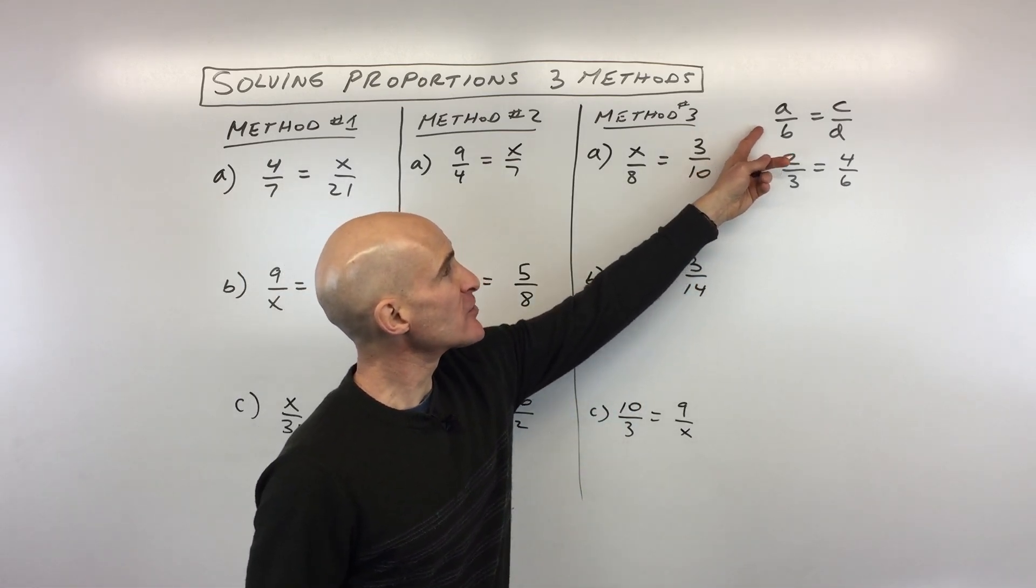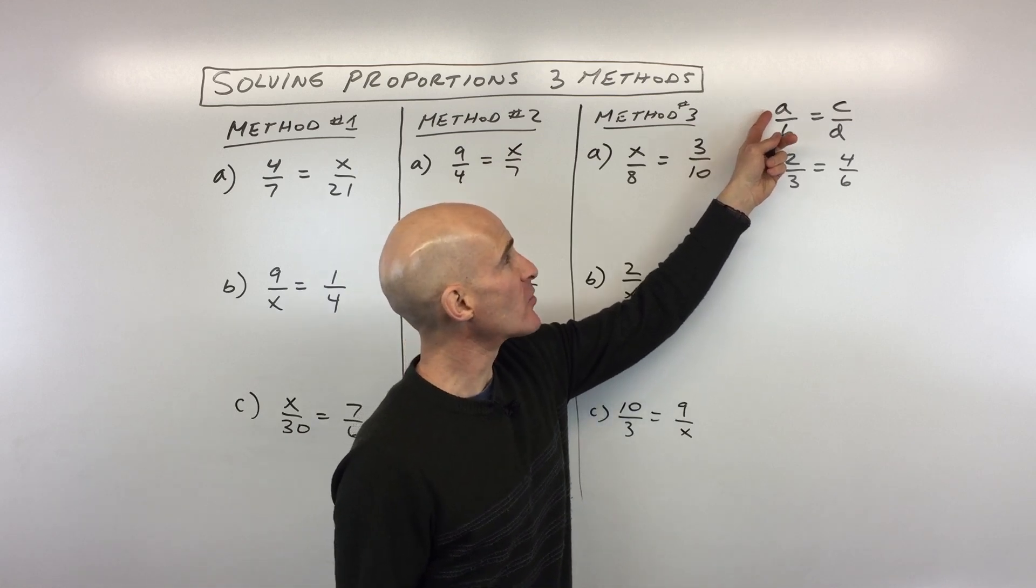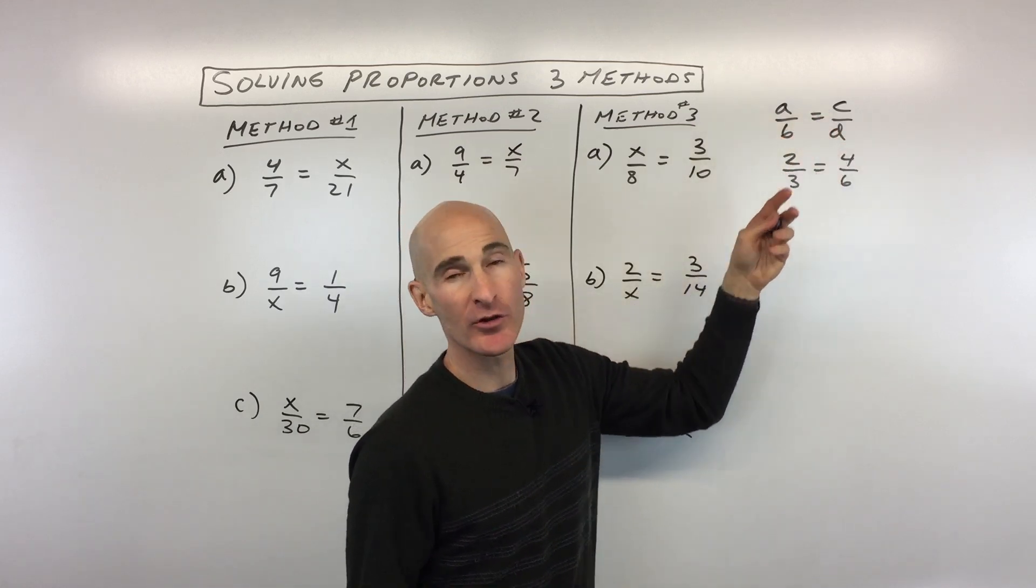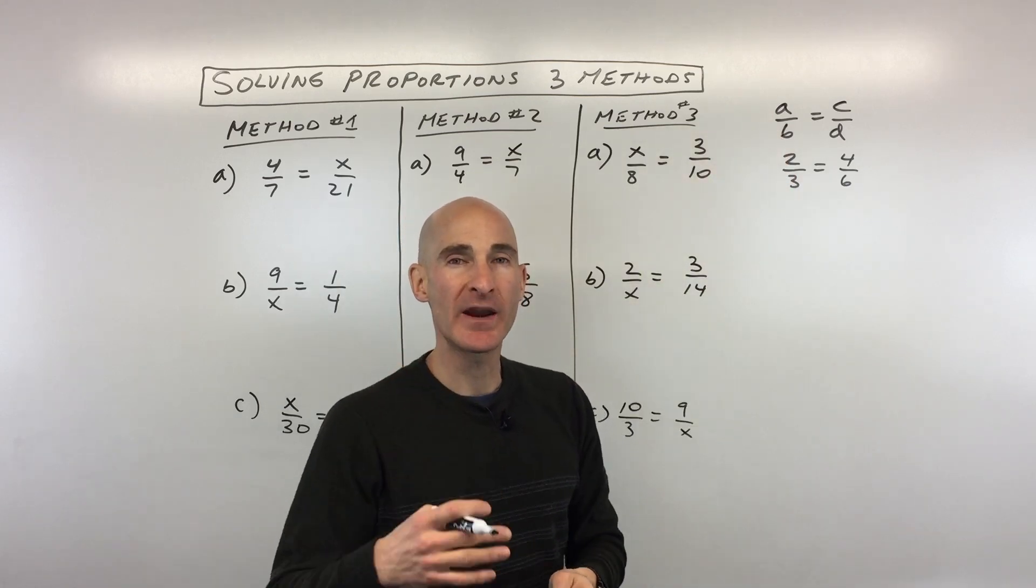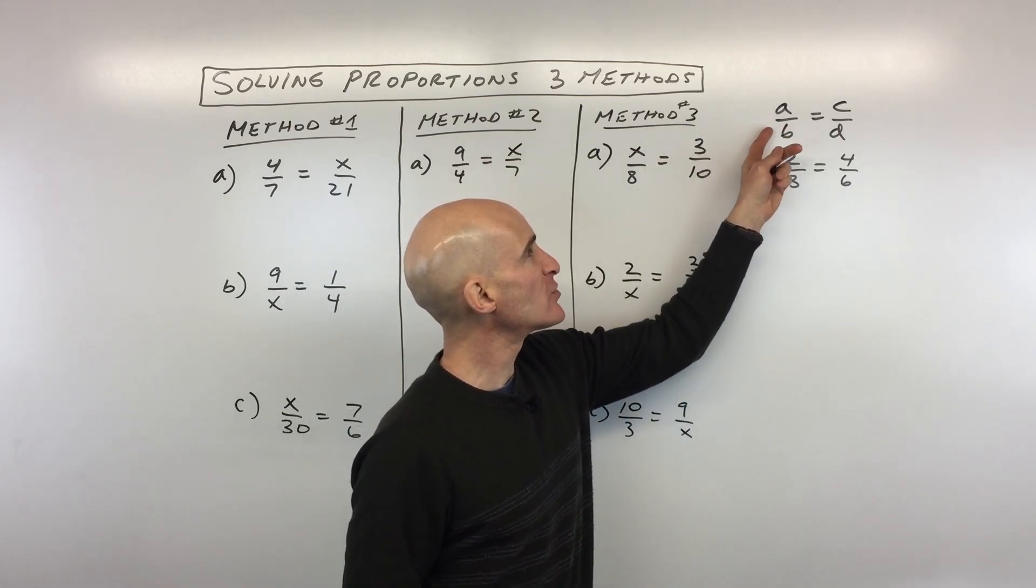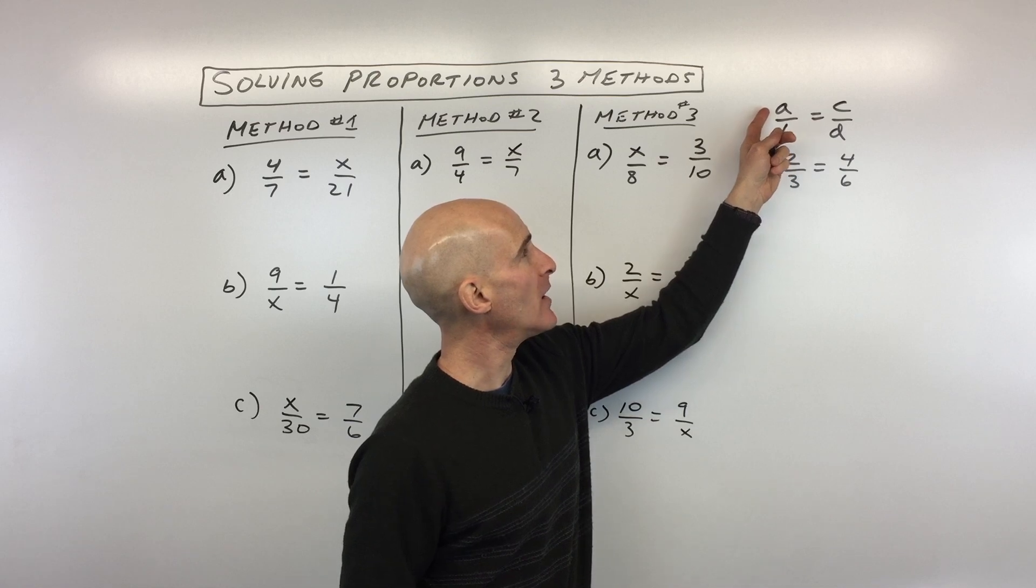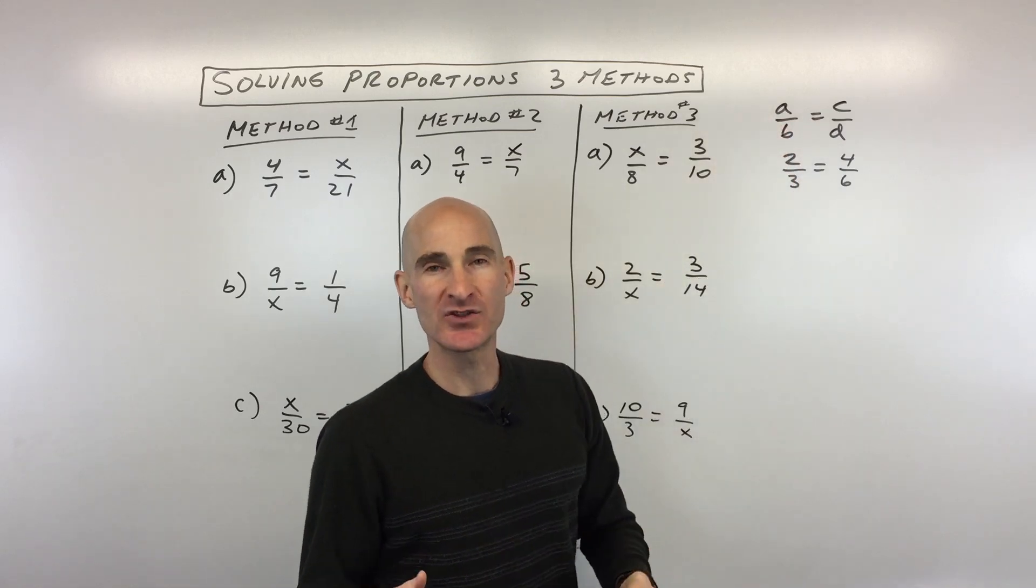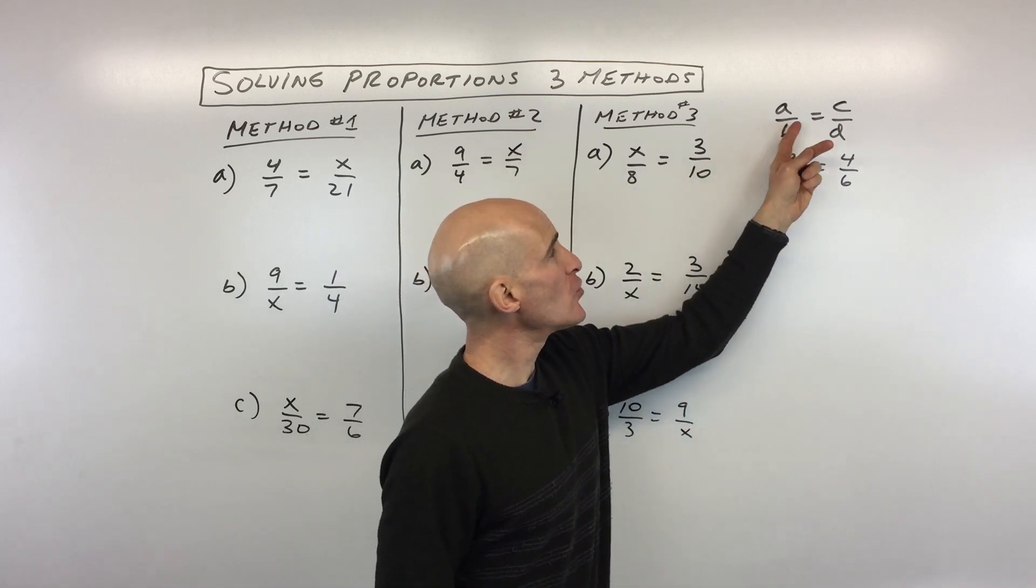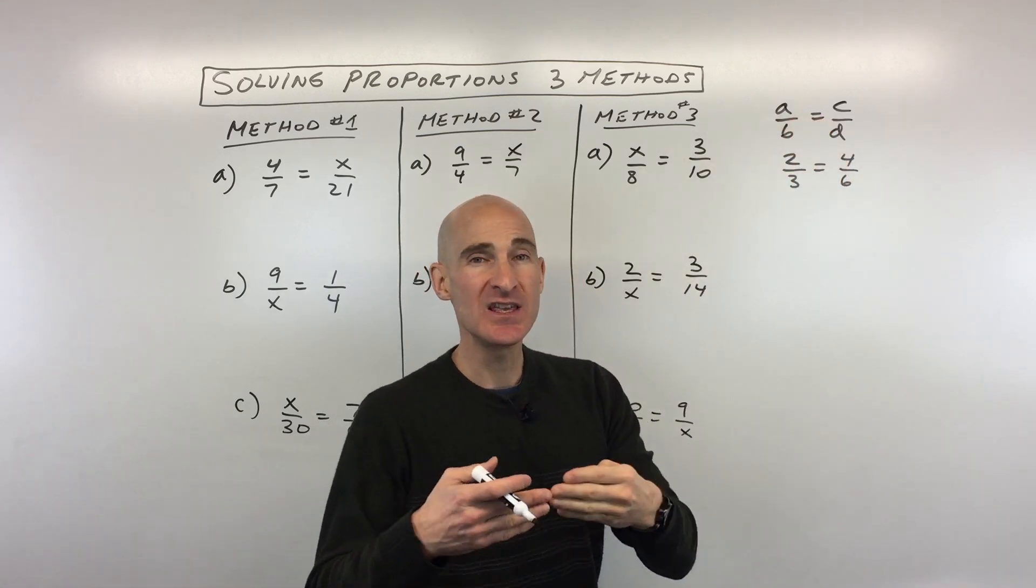So first things first, a proportion is a ratio equal to another ratio. So what's a ratio? A ratio is basically when you're comparing two quantities. And usually we write a ratio as a fraction, like for example, boys to girls, students to teachers, that sort of thing. You're comparing two quantities, but the two quantities, the two fractions are actually equal to each other.